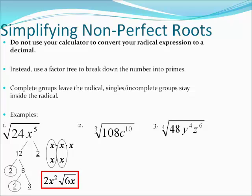On number two, this is a cube root. So when we break down 108 we're looking for groups of three things. 108 breaks down into 36 times three. Thirty-six breaks down into six times six, and each one of the sixes break down into three times two. You have three threes — they're going to come out and leave the radical. You have two twos left over; they multiply together to make four left inside the radical.